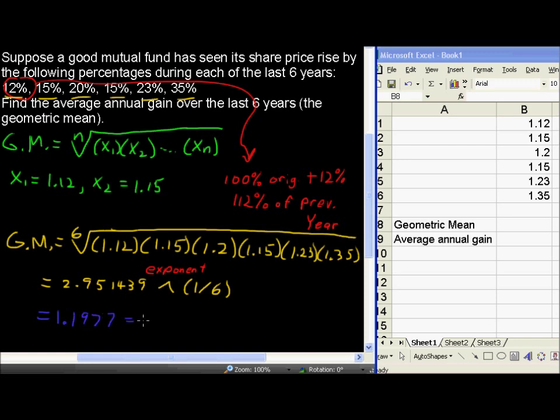So that equals 119.77% of the original. So that would mean a 19.77% increase, average annual increase.